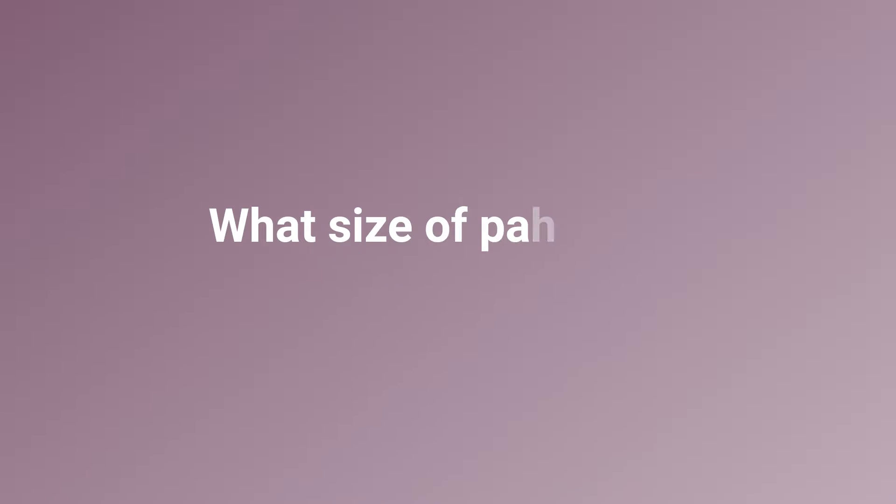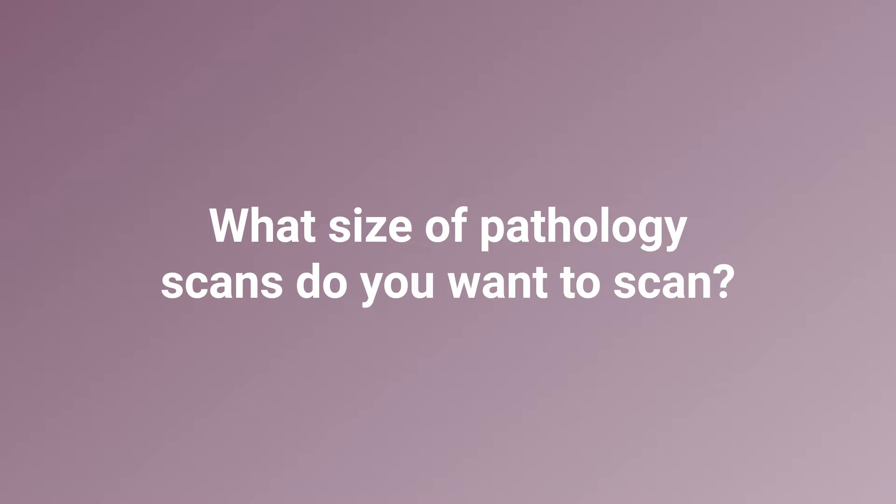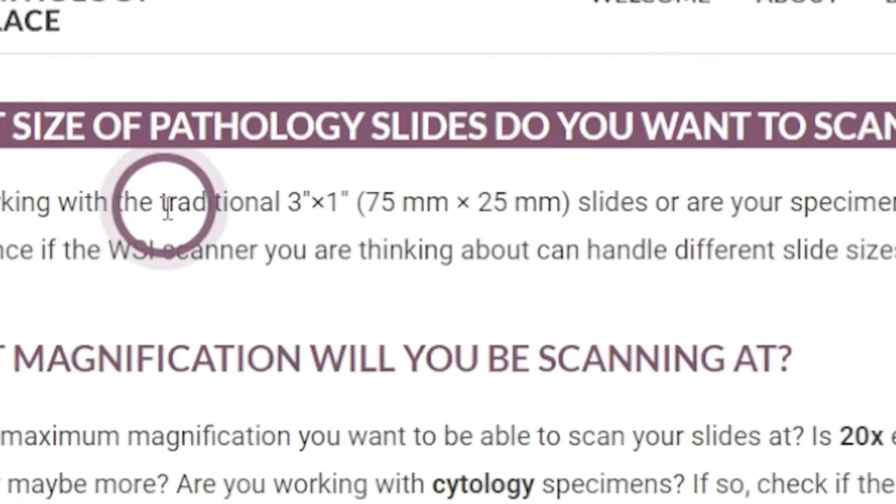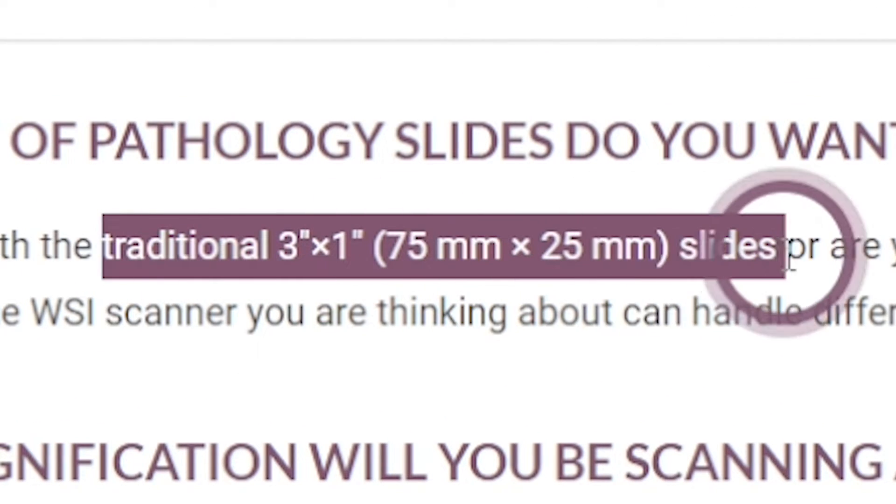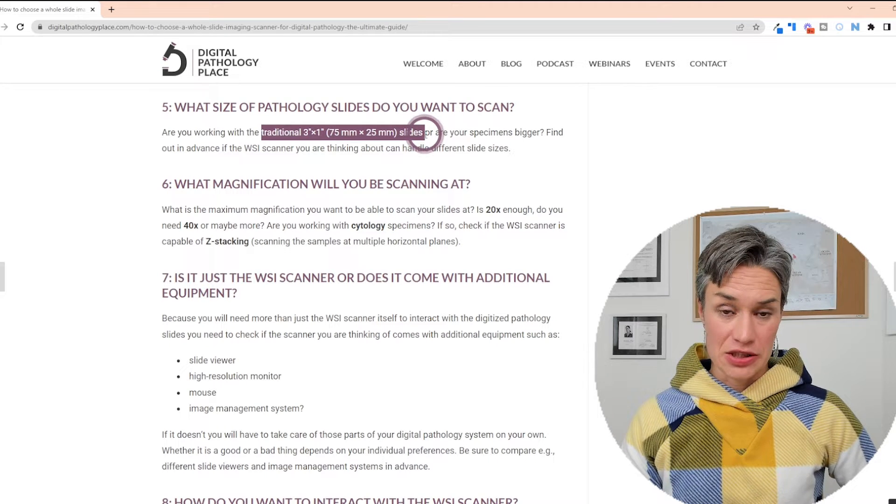The fifth question is: what size of pathology slides do you need to scan? The standard size is 3×1 inches (75mm × 25mm). If you're working with larger specimens — brain samples, bone samples, or anything bigger than a standard slide — you need a scanner that can accommodate that. Sometimes two regular slide spaces can be joined, but definitely check before you buy.